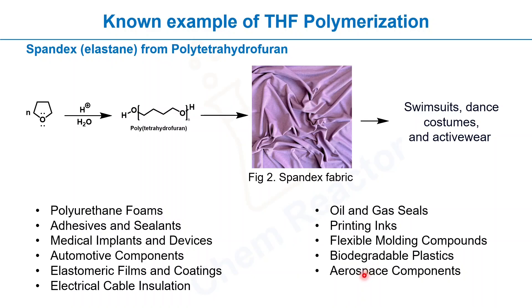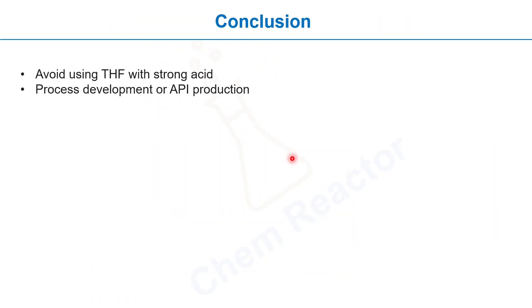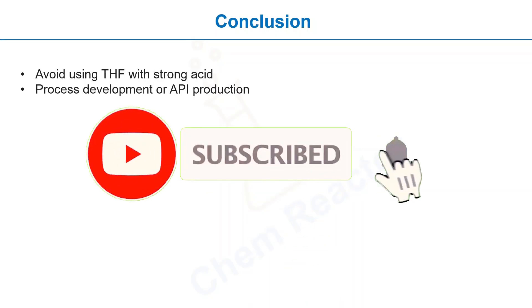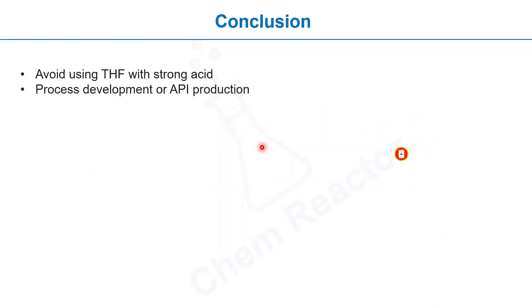In conclusion, avoid using THF with strong acids. It's fine if you're working on a small scale reaction, but if you are working in process chemistry or large-scale reactions, using concentrated HCl and THF together as a solvent is not an ideal situation. I hope you enjoyed the video — please like and subscribe so that it motivates me to make more videos like this. Thank you.